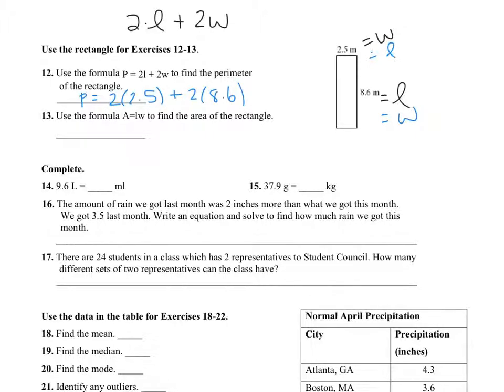So remember that you have to show your work. So it's going to be 5 plus 2 times 8.6 is 17.2. So the answer is 22.2. And you want to have units. Since I'm talking about meters, my units are going to be meters. And then area equals length times width. Area equals 2.5 times 8.6. 2.5 times 8.6 is 21.5 meters squared.